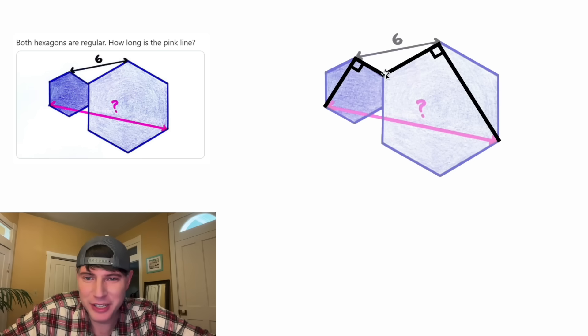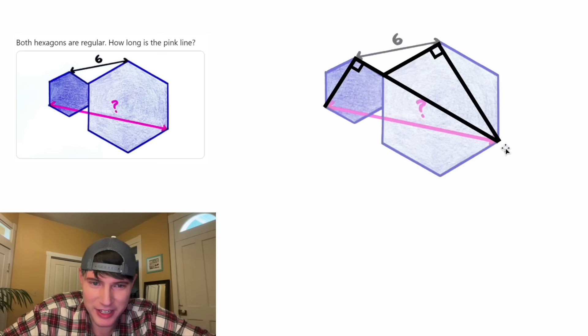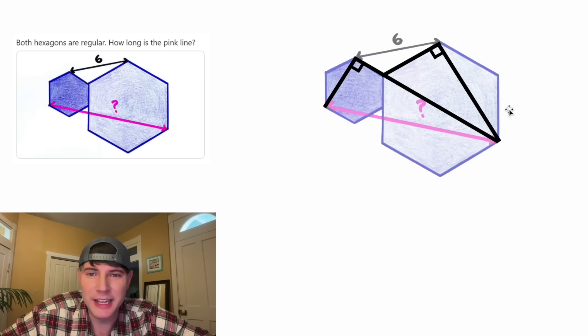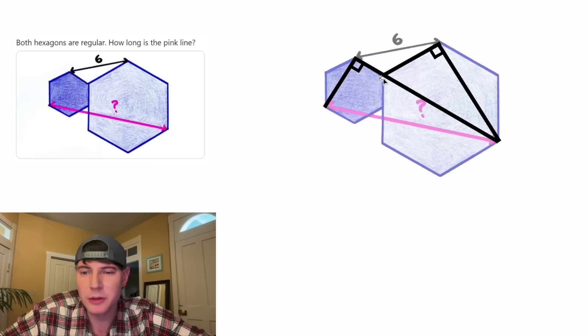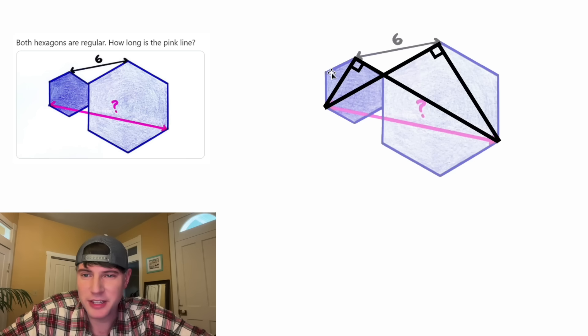And then from here, if we extend this all the way to here, it will hit this other vertex. And that has to do with the fact that this is parallel to this is parallel to this. And same thing here, if we extend this one, it will hit this vertex. And once again, that's related to the fact that all of these are parallel.